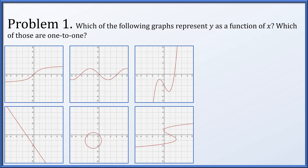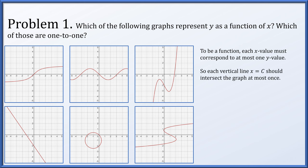Problem 1: we have six graphs and we're asked which of the following represent y as a function of x, and of the ones which do, which are one to one. Now to be a function, an x value must correspond to at most one y value. So a vertical line x equals constant must intersect the graph at most once — we call this the vertical line test. Starting with the graph in the upper left, we swipe a vertical line across the graph and ask: does it ever intersect the graph more than once? As we move that line left to right, we only see one intersection at a time, so it's a function.